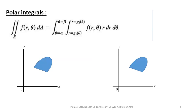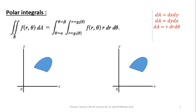Next, here is the general representation of a polar integral: double integral over the region of F of R and theta, dA. Please note that in the Cartesian system, the value of dA is dx dy or dy dx depending on your inner and outer variable, but in polar coordinates, the value of dA is always R dr d theta.